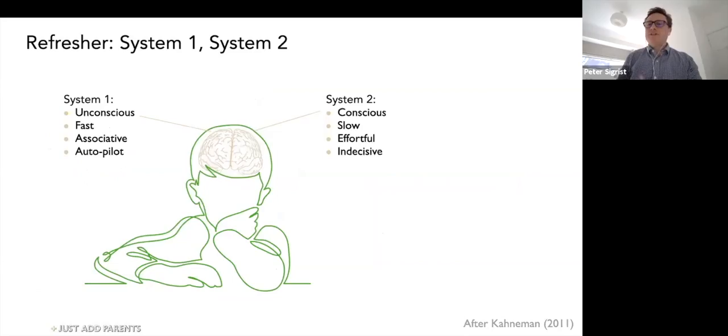The final piece here is System 1 and System 2 thinking, which was the theory underpinning Daniel Kahneman's book in 2011. His basic premise is that we make every effort to absorb most information fast, which means we deal with it on the fly, instinctively, on autopilot.